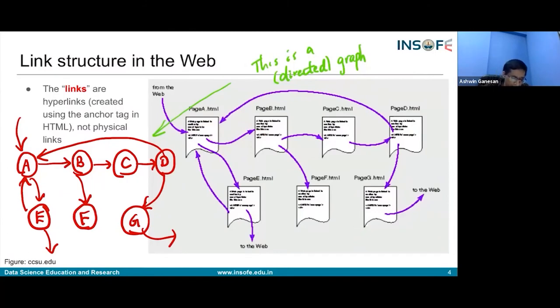You have these different web pages—A.html might be on INSOFE's website, maybe there's a link there to some other web page on the same server or a different server, and so on. What you can do is abstract from this particular web graph a directed graph that models the internet.